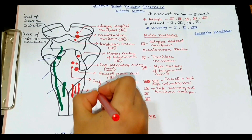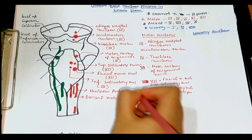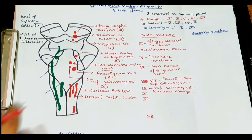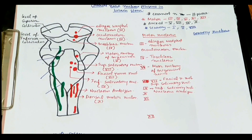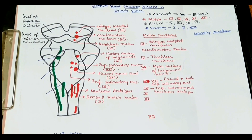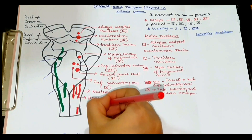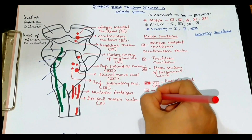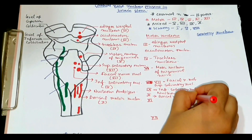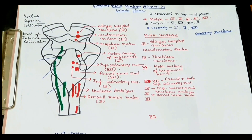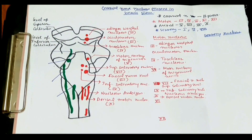In the medulla, there is another nucleus called the dorsal motor nucleus, which is the motor nucleus of cranial nerve ten. Cranial nerve ten has one motor nucleus situated in the medulla, and its name is the dorsal motor nucleus.